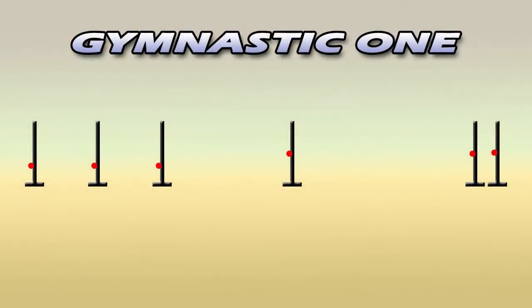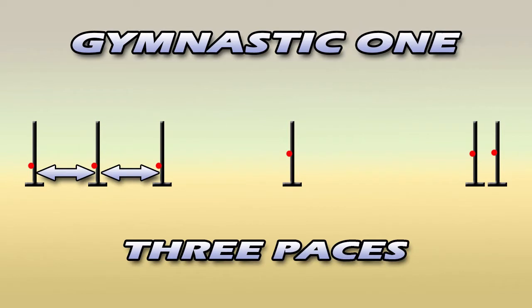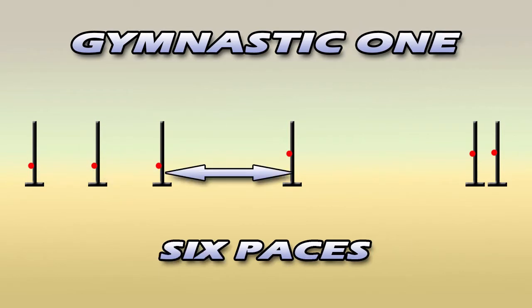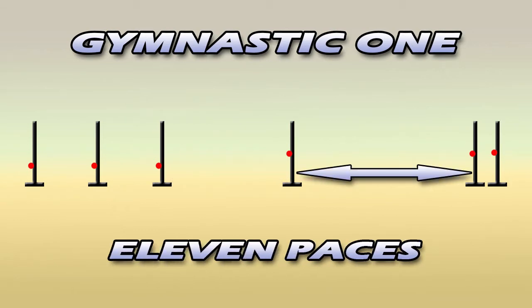So the setup is as follows. It's three paces between the two pops, then six paces to the first vertical, and eleven paces to the oxer. Now these distances aren't cast in stone. You can make them slightly shorter or longer if your horse is battling with them.